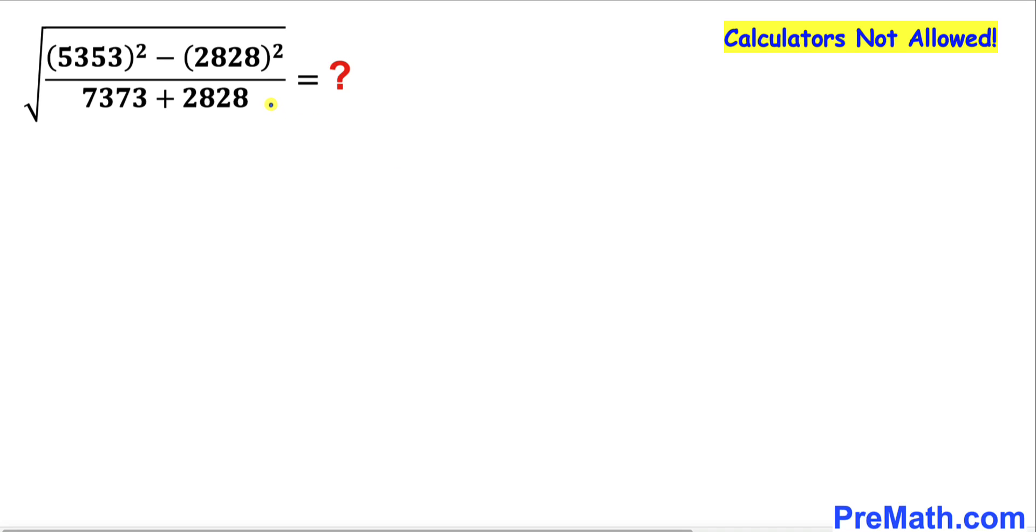Welcome to PreMath. In this video, we are going to simplify and find the value of this given expression: square root of (5353² - 2828²) divided by (7373 + 2828).